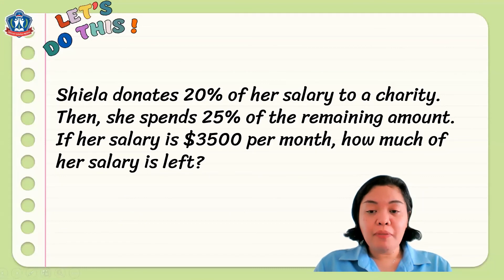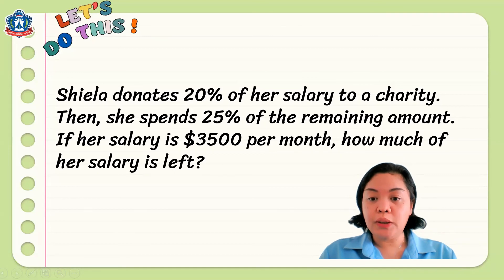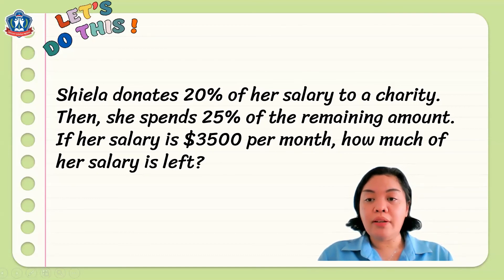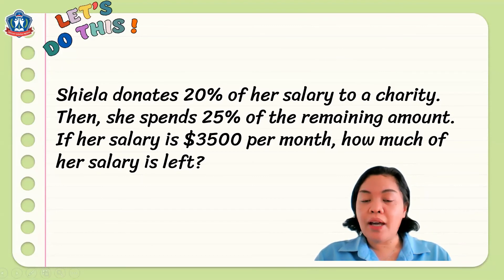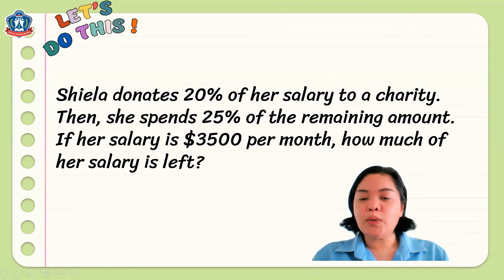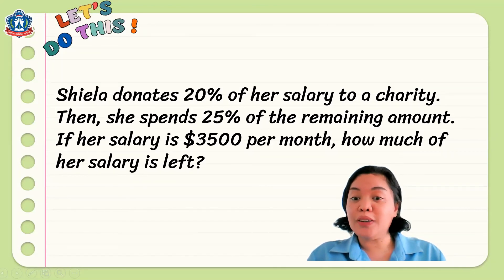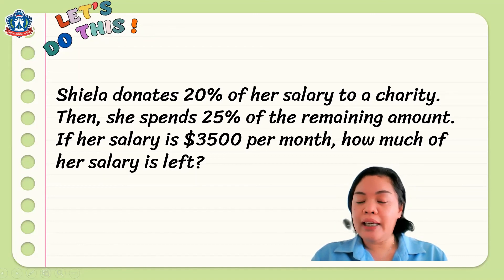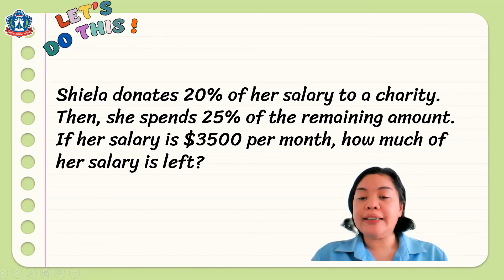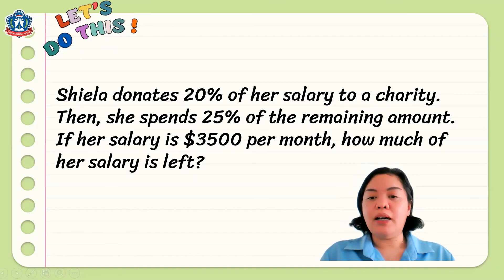Here is a problem for P6: Shella donates 20% of her salary to charity, then spends 25% of the remaining amount. If her salary is $3,500 per month, how much is left? First, after donating 20%, she has 80% left. Then she spends 25% of that 80%, which equals 20%. So she gives 20% to charity and spends another 20%, leaving her with 60% of her total salary. Calculate 60% of $3,500 to find the amount she has left.